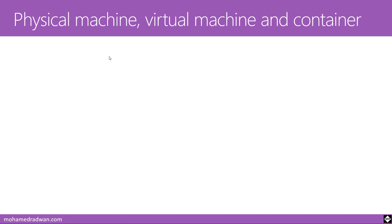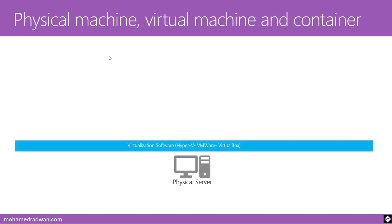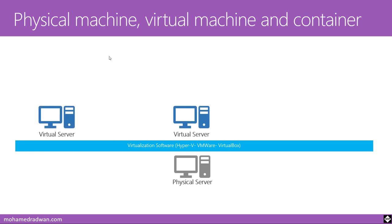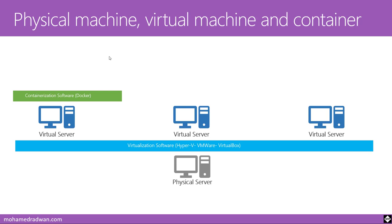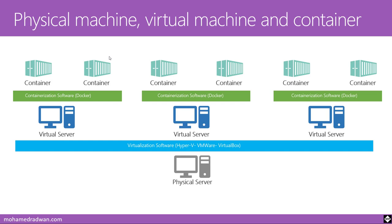Let's understand the difference between physical machine, virtual machine, and containers. On a physical server, we have virtualization software like Hyper-V, VMware, or VirtualBox, which works on the hypervisor technology. On this physical machine we can have several virtual machines, and on each virtual machine we can have containerization software like Docker, which allows us to create several containers on the same virtual machine.